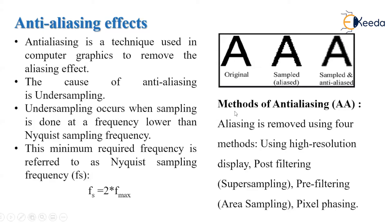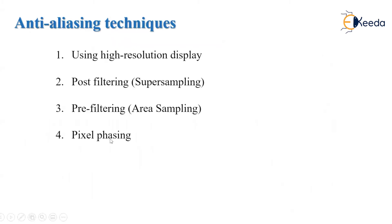There are four different methods for anti-aliasing to remove the aliasing effect. First is using a high-resolution display. Second is post-filtering, also called super sampling. Third is pre-filtering, also called area sampling. And fourth is pixel phasing. We will see all these four methods one by one.